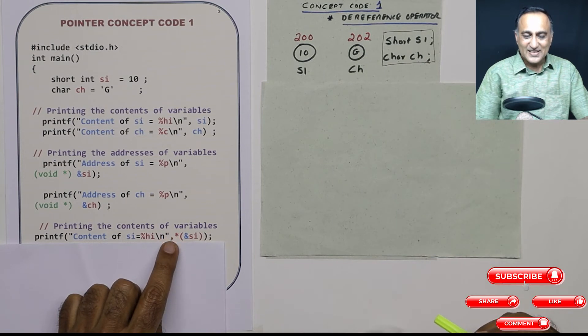So all that the star does is it says give me the contents or lot of authors use the word value at that particular address. So what is the value at address 200? It is 10. So if I just print address of SI, it will print 200. Because I have put the star, it is going to print value at that particular address. Value at address 200 happens to be 10.